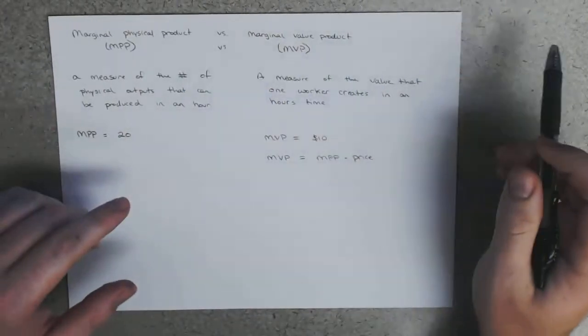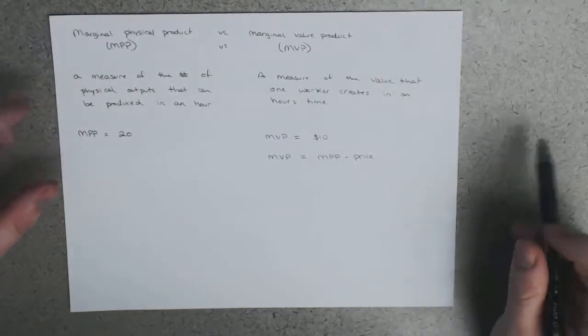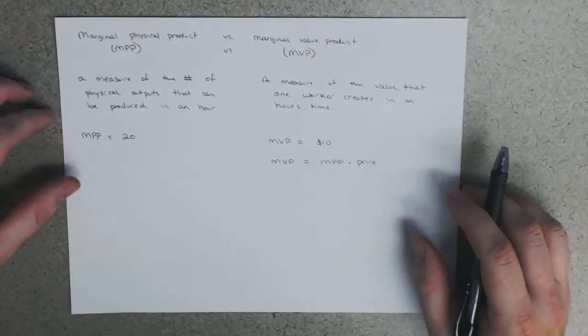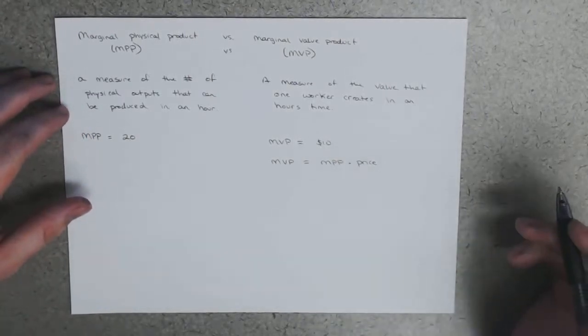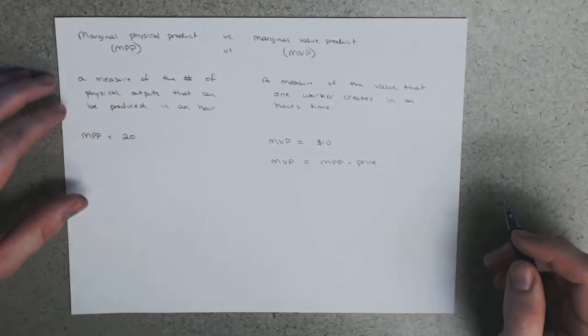Okay, and so with this distinction between MPP and MVP, we can actually answer the question from the beginning of this week's videos: what happens to the demand for orange pickers when the price of oranges changes?